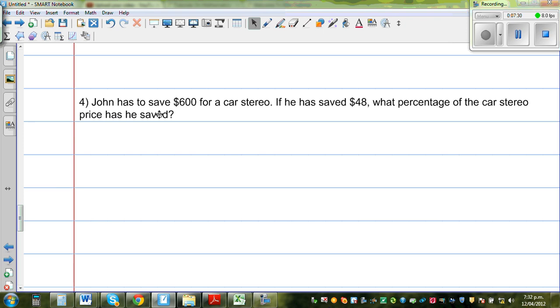So the next question. John has to save $600 for a car stereo. If he has saved $48, what percentage of the car stereo has he saved? So he has saved 48 out of 600. 48 out of 600. So I want to write this as a percent. So I want to write this out of 100. So this is 4 times 20, 4 times 12 times, let us start with 2. So I want to start with 2 times 24, it's 48. This is 2 times 300.